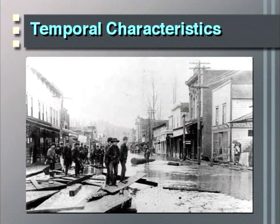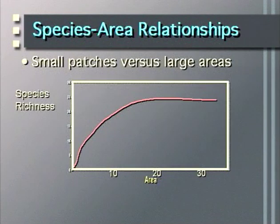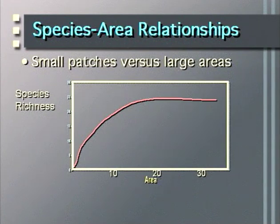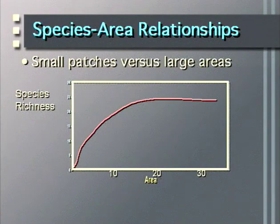One of the first concepts important in managing the landscape is to recognize the relationship between area and the number of species. This is a typical species-area curve in which we see increasing numbers of species as the area of consideration becomes larger. If we only manage for very small patches, we protect small numbers of species; managing for increasing area protects increasing numbers of species.